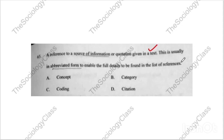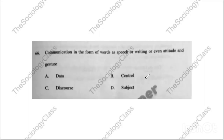Question sixty-five: 'A reference to a source of information or quotation given in a text.' This is also repeated. The correct answer is citation. Question sixty-six: 'Communication in the form of words as speech or writing, or even attitude and gesture.' Options: data, control, discourse, subject. The correct answer is C — discourse. Remember: discourse is any form of communication — writing, speech, gesture, or attitude.